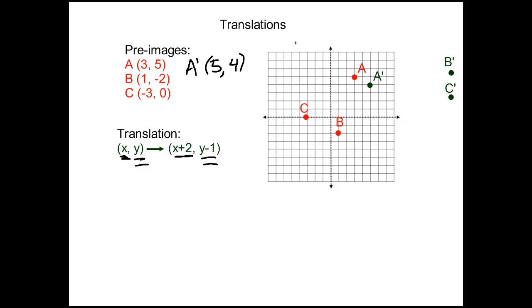Let's do the same thing for B. B prime is going to show up not with an x-value of 1, but with an x-value of 1 plus 2. And it's not going to have a y-value of negative 2. It's going to have a y-value of negative 2 minus 1. (3, -3), you end up down here.